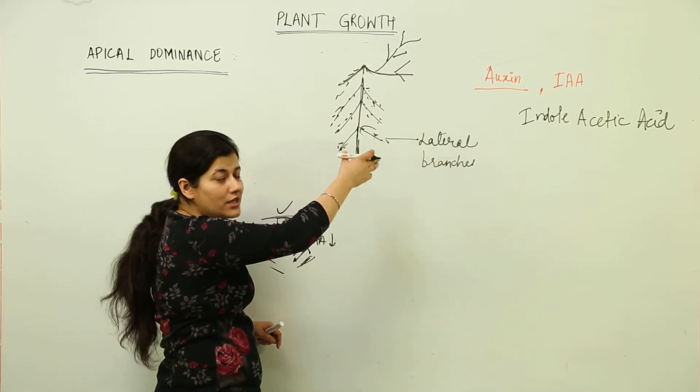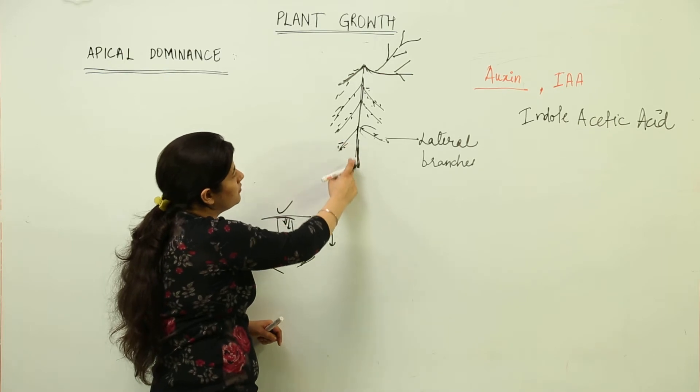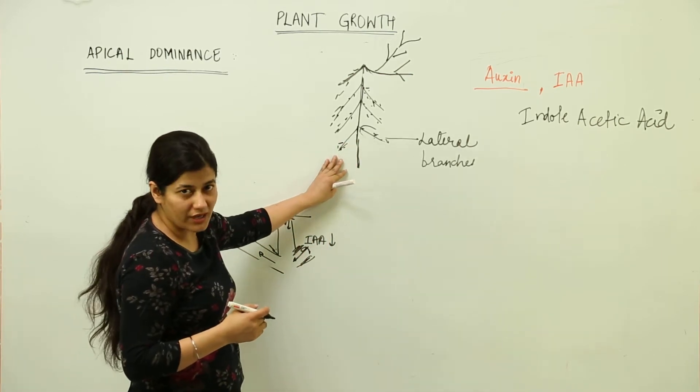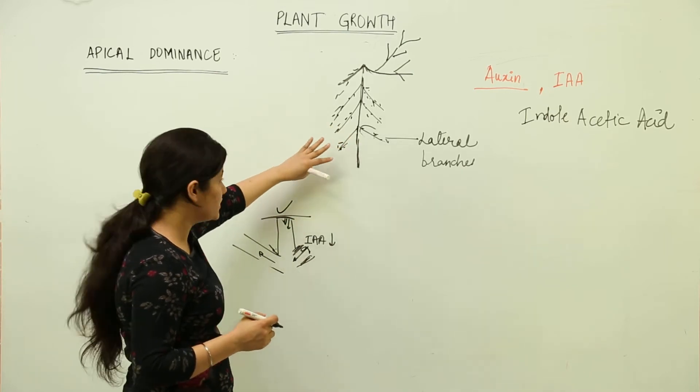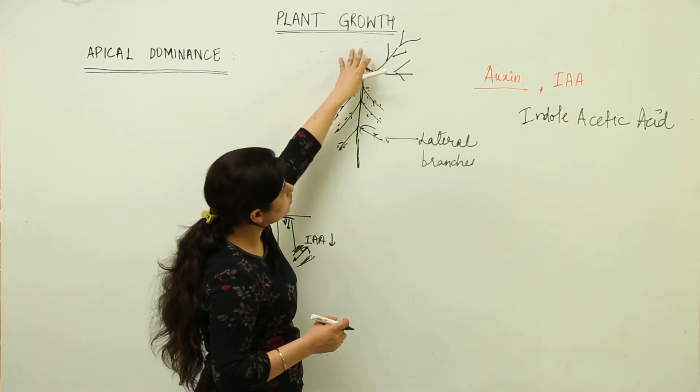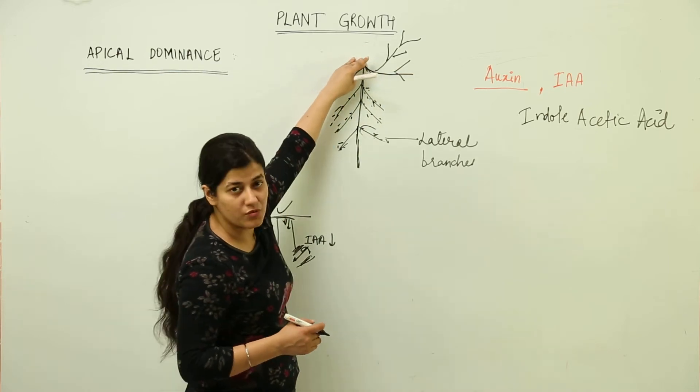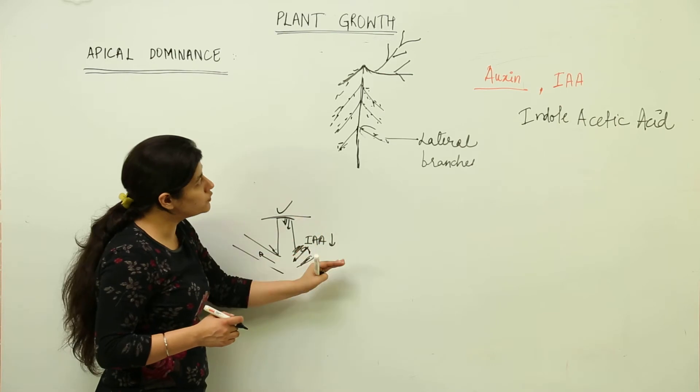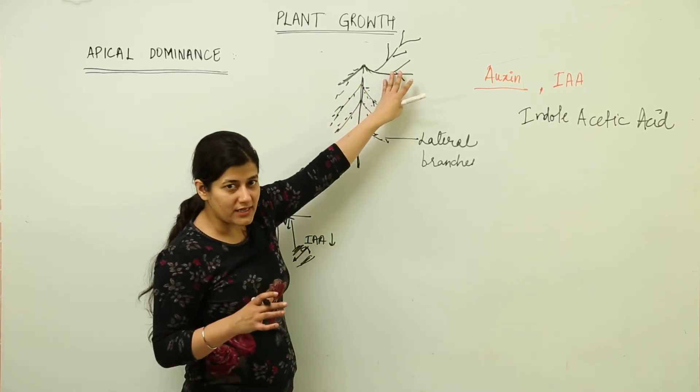In nature we don't find such intact Christmas trees around us. Christmas tree is the simple name; otherwise the scientific name for this particular plant is Araucaria. I'm going to use the term conifers henceforth. In conifers, if the head has been removed, the lateral branch will have the indole acetic acid concentration and would try to take the apical dominance.